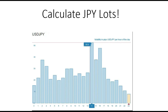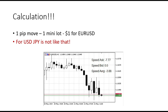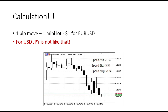However, to calculate lots in dollars, this is a little bit tricky. Look at this — if you have a one-pip move for one mini lot, it's one dollar for EUR/USD. However, for USD/JPY it is not like that. We have slightly different numbers and I will show you why.